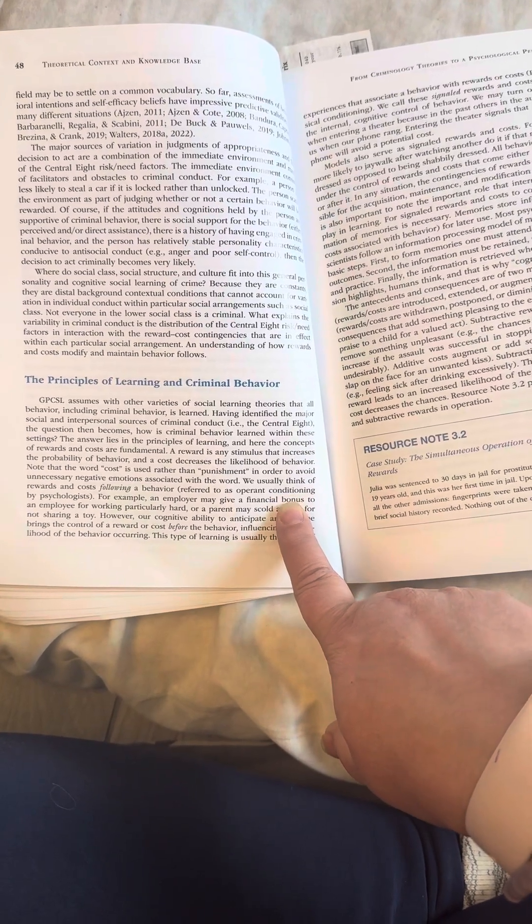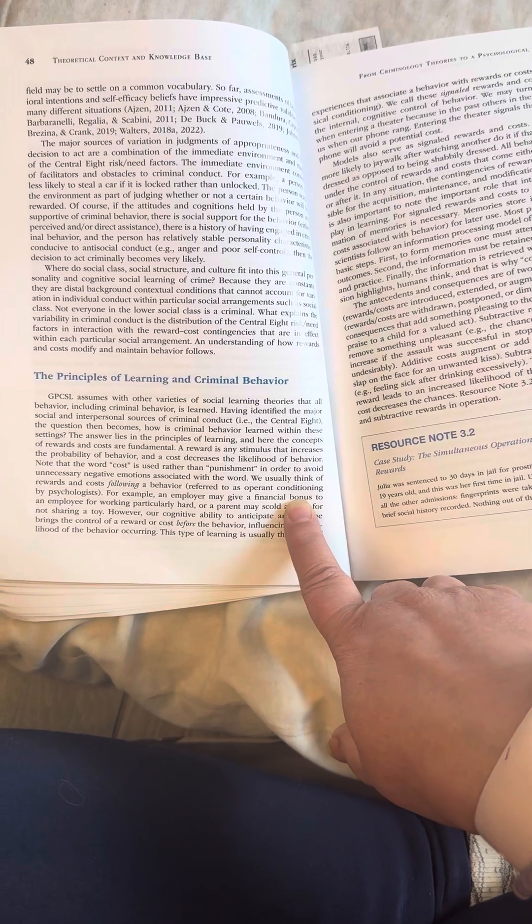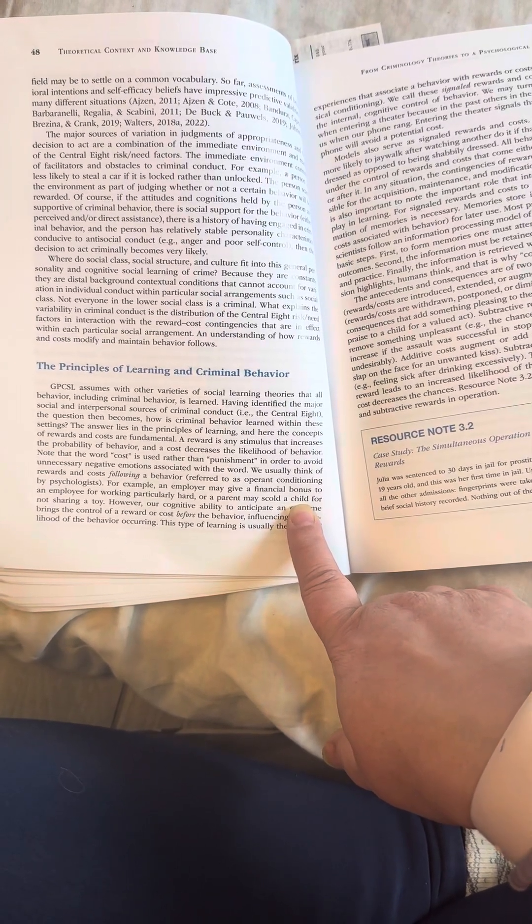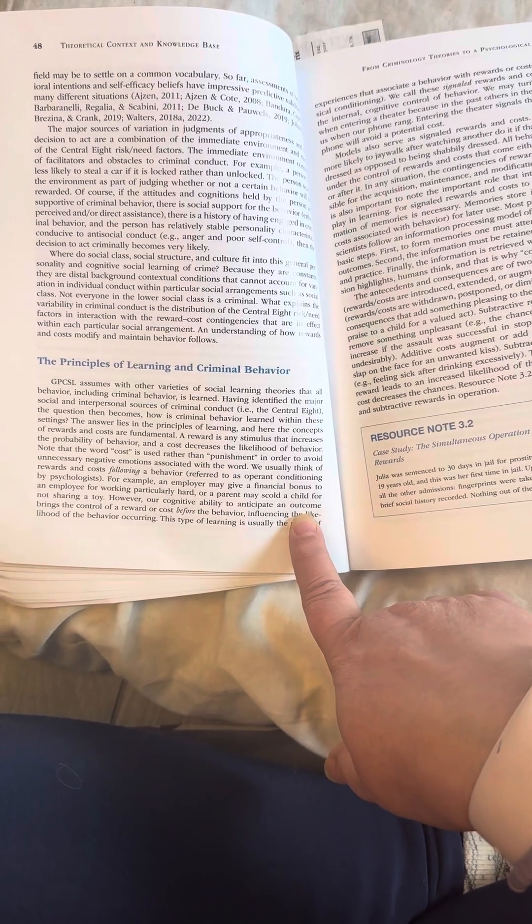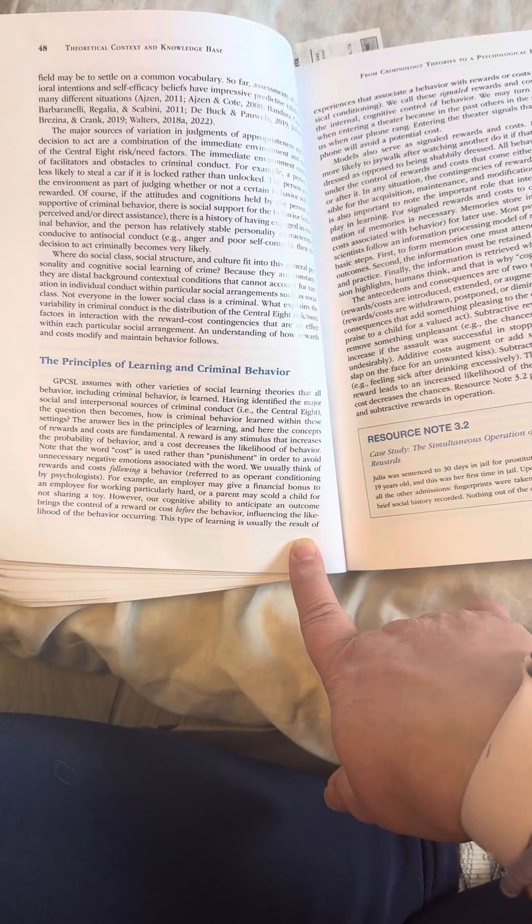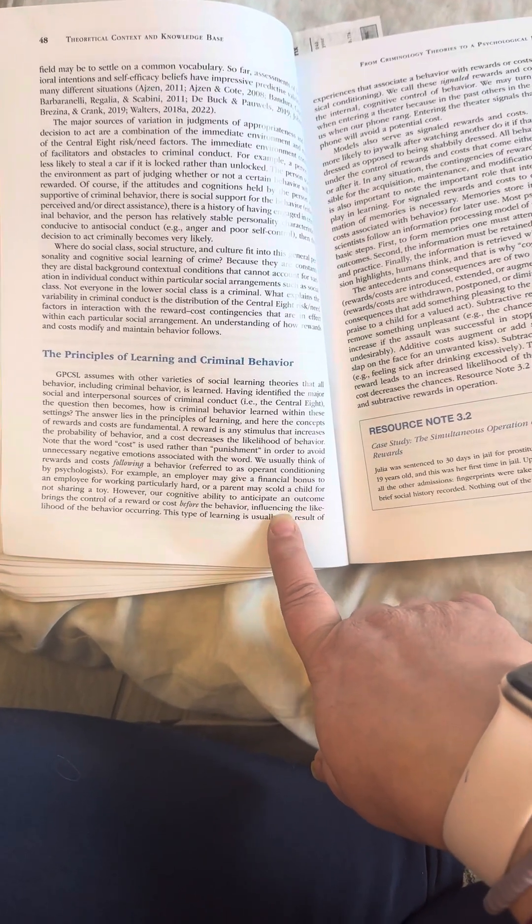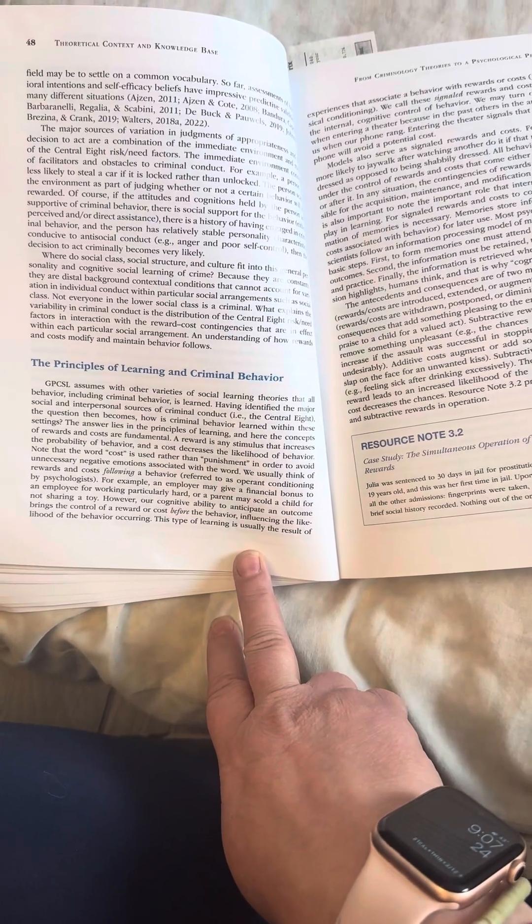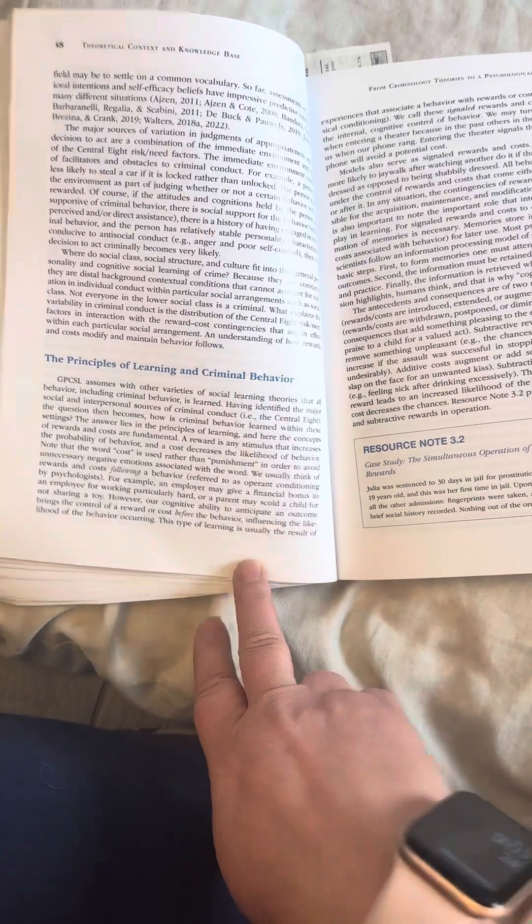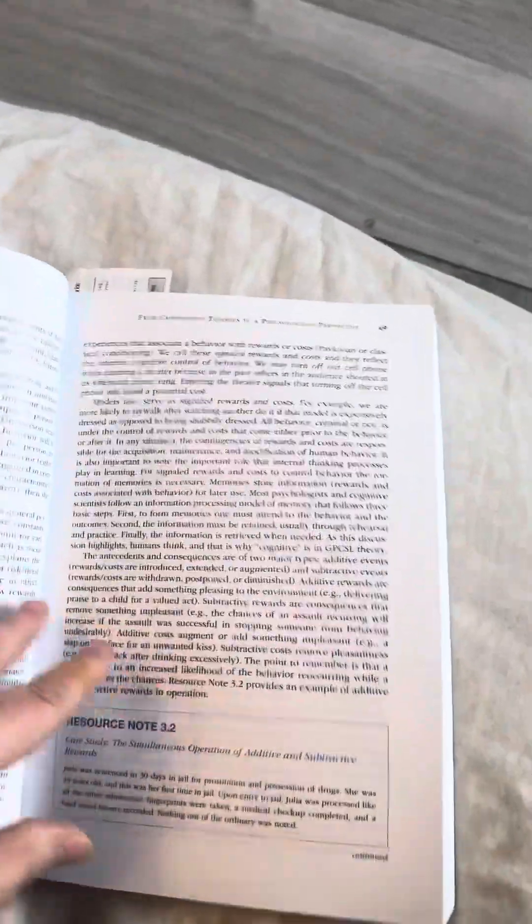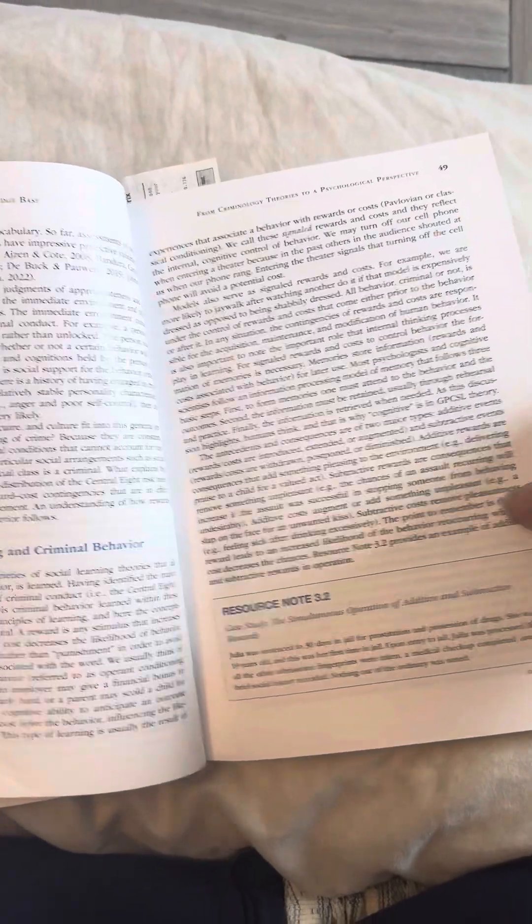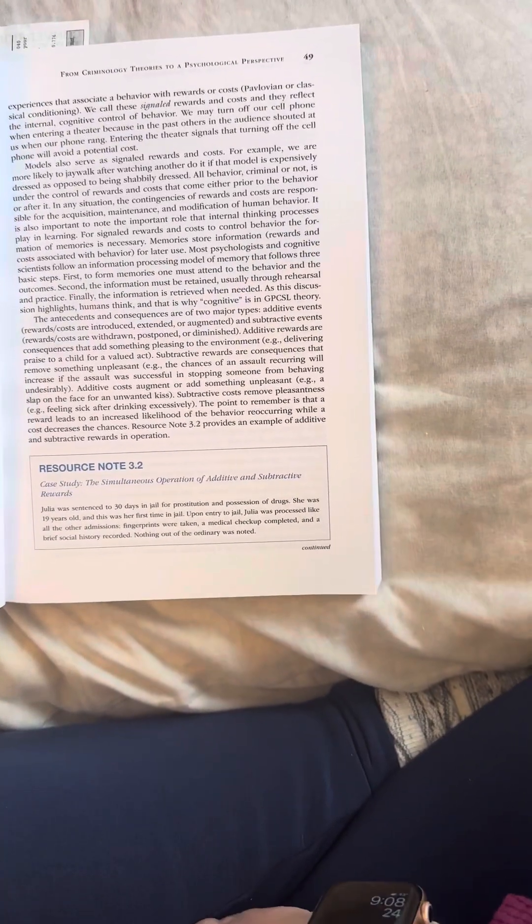Note that the word cost is used rather than punishment in order to avoid unnecessary negative emotions associated with the word. We usually think of the rewards and costs following a behavior referred to as operant conditioning to psychologists. For example, an employer may give a financial bonus to an employee for working particularly hard or a parent may scold a child for not sharing a toy. However, our cognitive ability to anticipate an outcome brings the control of a reward or cost before the behavior influencing the likelihood of the behavior occurring. This type of learning is usually the result of experiences that associate a behavior with rewards or cost, Pavlovian or classical conditioning.